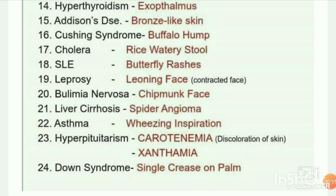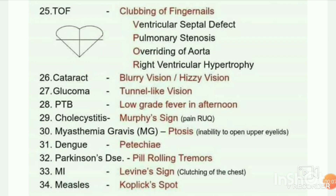Hyperpituitarism — carotenemia: discoloration of skin, and xanthoma: yellowish skin. Down syndrome — single crease on palm. Tetralogy of Fallot — clubbing of fingernails; four signs: ventricular septal defect, pulmonary stenosis, overriding of the aorta, and right ventricular hypertrophy.